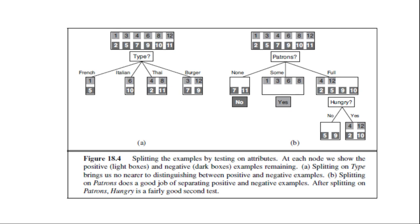Second, if there are some positive and some negative examples, then choose the best attribute to split them. Figure B shows hungry being used to split the remaining examples.